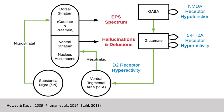Hyperactivity of dopamine-2 or D2 receptors along the mesolimbic pathway stimulates the ventral striatum, which includes the nucleus accumbens, resulting in hallucinations and delusions. The pathway on the far left is reflective of a pathway important in the understanding of the side effects of antipsychotics used to treat psychosis, in that blocking D2 receptors along the nigrostriatal pathway will result in extrapyramidal symptoms, or EPS, which are movement abnormalities that will be discussed in the palliation lecture.